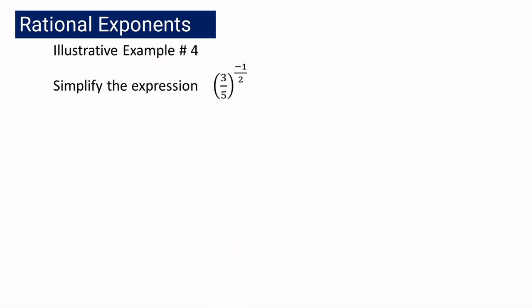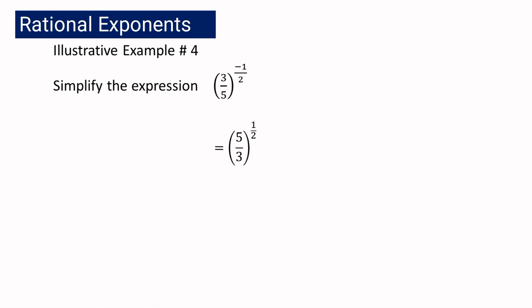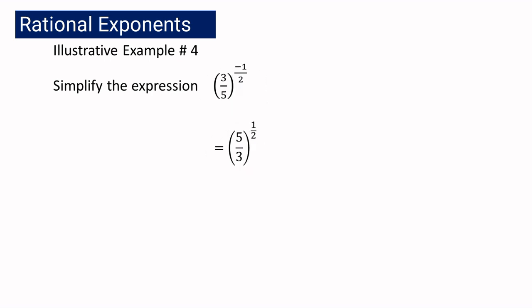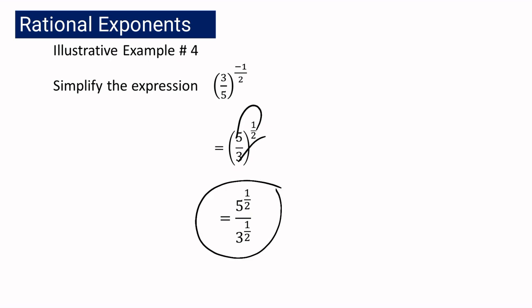Let us consider the next example. We have here quantity 3 over 5 raised to negative 1 half. You have a negative exponent, so to make it positive, we are going to get the reciprocal of our base 3 over 5, which becomes 5 over 3 raised to 1 half — the negative 1 half exponent now becomes positive 1 half. Then, using the law of exponent, we distribute the exponent to both numerator and denominator. So we have 5 raised to 1 half over 3 raised to 1 half. And this is our final answer.